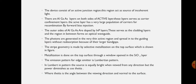The metalization is done on the top surface through a window opened in the SiO2 layer. The emission pattern for the edge emitter is the Lambertian pattern. In the Lambertian pattern, the source is equally bright when viewed from any direction, but the power of the light diminishes as a function of cos theta, where theta is the angle between the viewing direction and the normal to the surface.